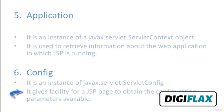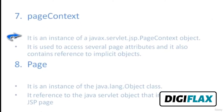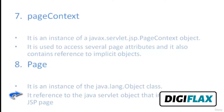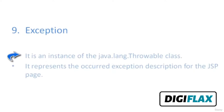The pageContext implicit object is an instance of javax.servlet.jsp.PageContext and is used to access several page attributes; it also contains references to implicit objects. The page implicit object is an instance of java.lang.Object and references the Java servlet object that implements the JSP page. It is used to access java.lang.Object class methods. The exception implicit object represents the occurred exception description for the JSP page.